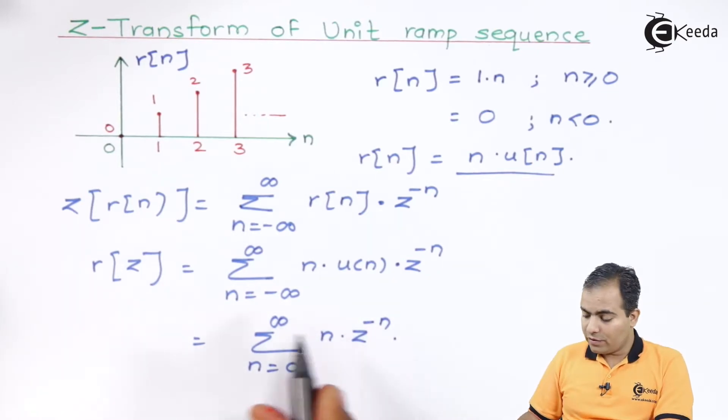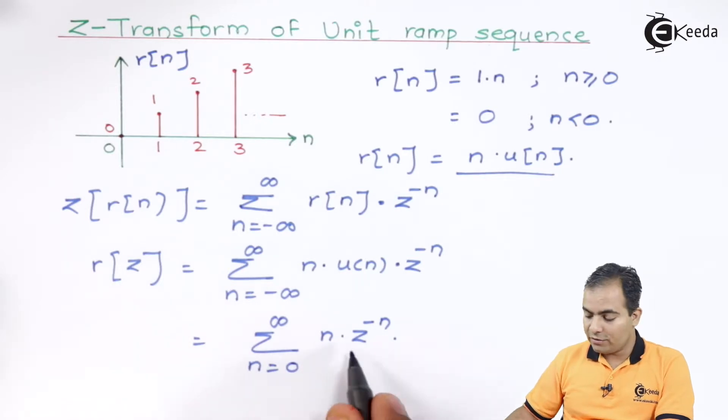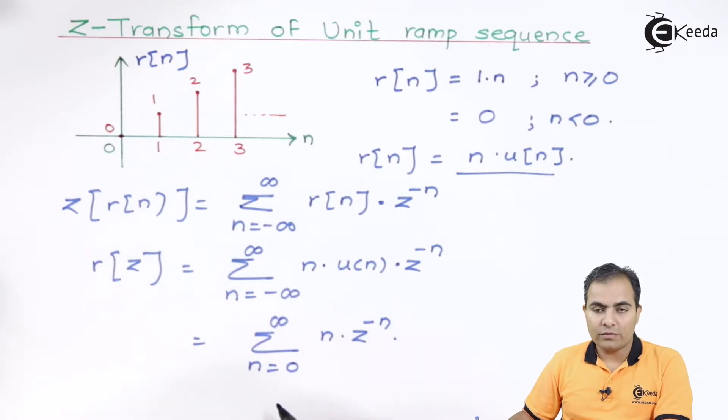Now, what is the next step? We have one formula. We have studied one formula of n into z to the power minus n. What was that? I will show you.